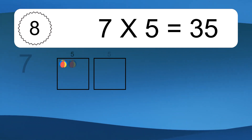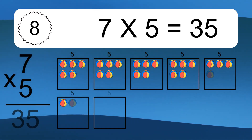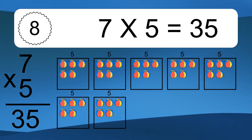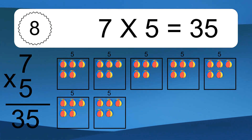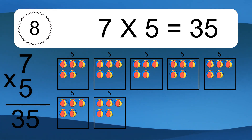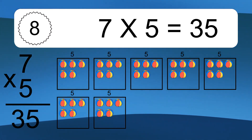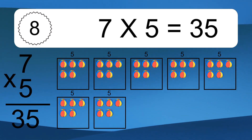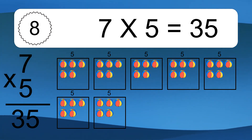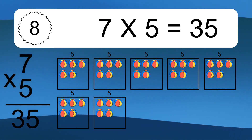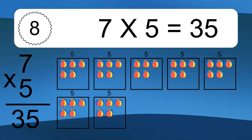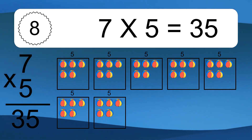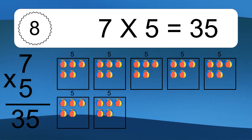7 times 5 equals what? We have 7 boxes, and each box has 5 colorful balls inside. If you count all the balls in all the boxes together, you will have 7 times 5 balls. This equals 35 balls.